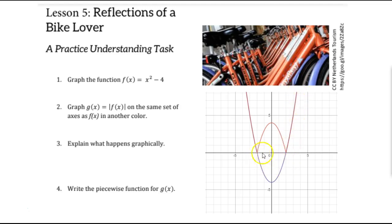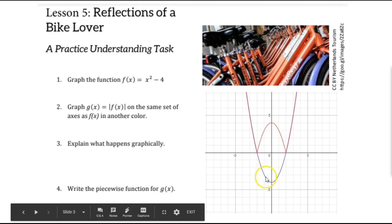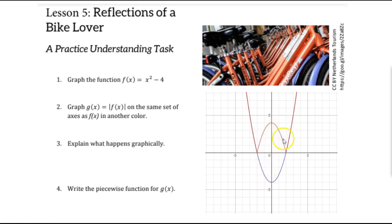If we think about that from the table, this was the point where our output started becoming negative. We started having negative outputs. Negative one was negative three. So the absolute value of negative three is positive three. And so that's why it turned around to come up this way.